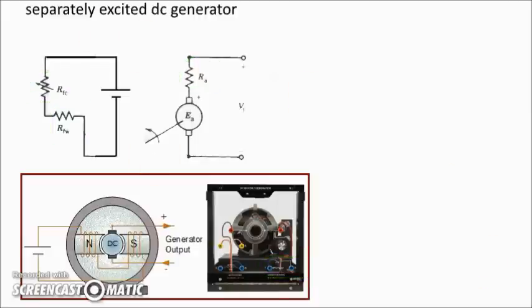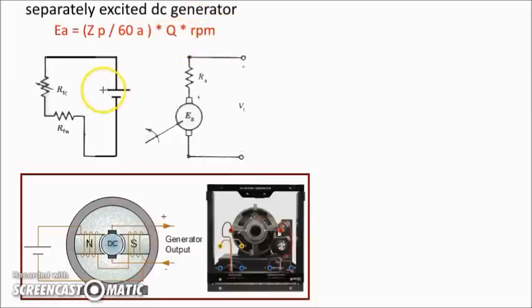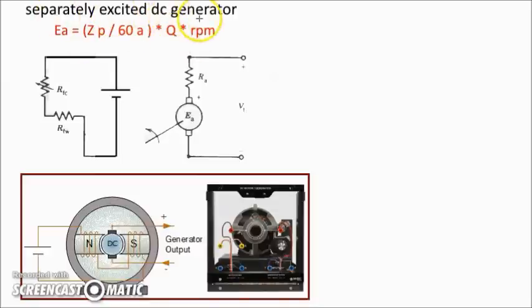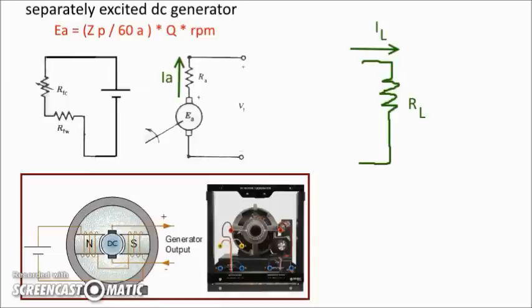The armature voltage follows this equation: Ea = k × φ × RPM. If we maintain a fixed speed for the prime mover and ensure that the external power supply and rheostat resistance don't change during measurements, that means our flux φ will remain the same. Because of this equation, in a separately excited DC generator Ea must be constant.